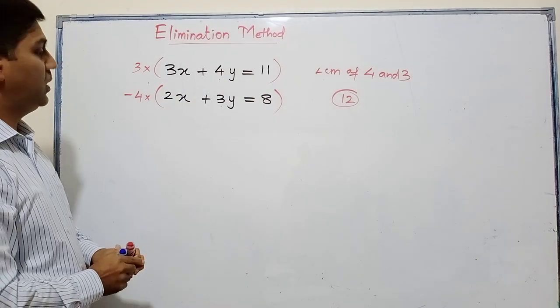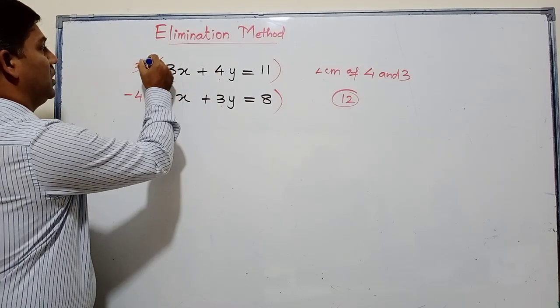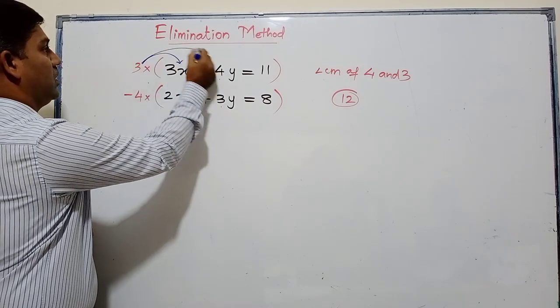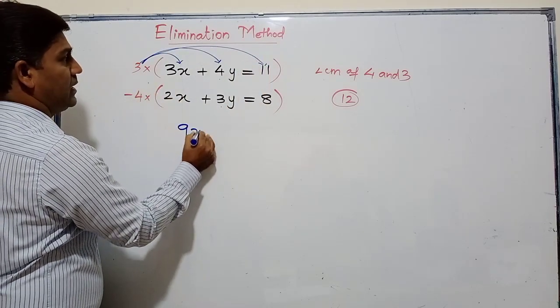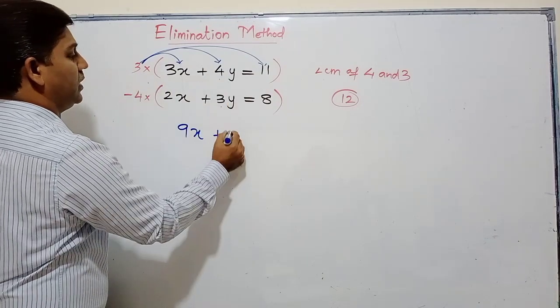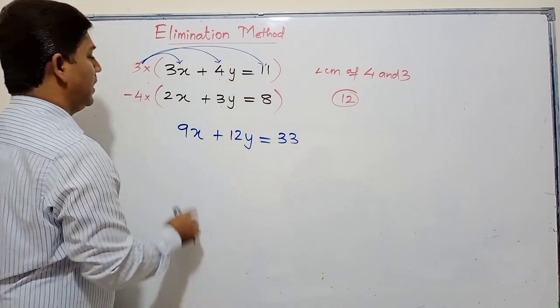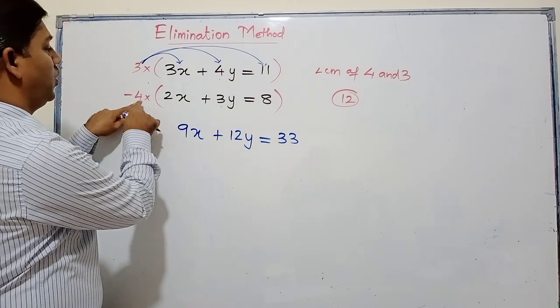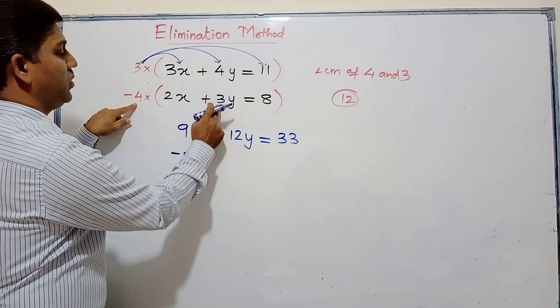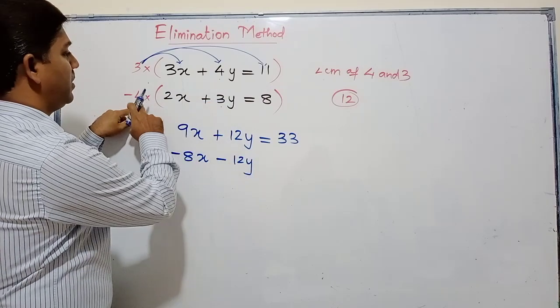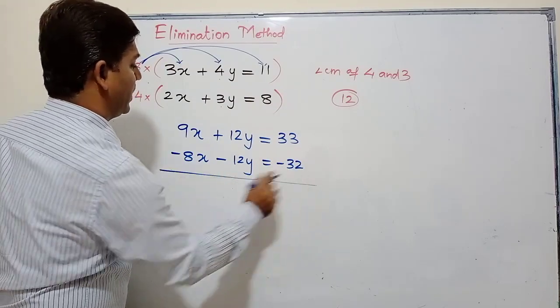Let's multiply and get the new equations. When I multiply, I have to multiply all the terms. 3 times 3 is 9x, plus 3 times 4 is 12y, and 3 times 11 is 33. Let's multiply the second equation by -4. -4 into 2 gives -8x, -4 into +3 is -12y, and -4 into 8 is -32.